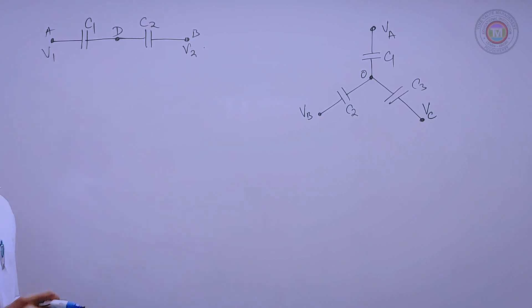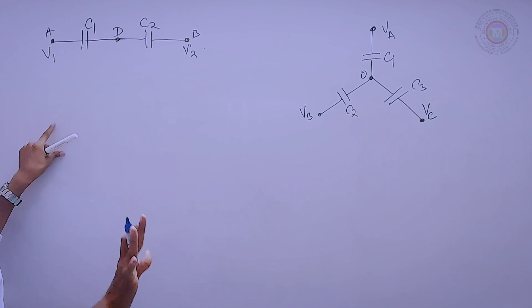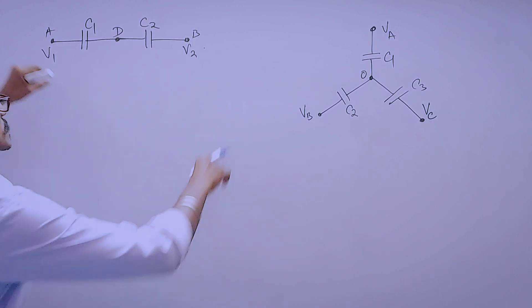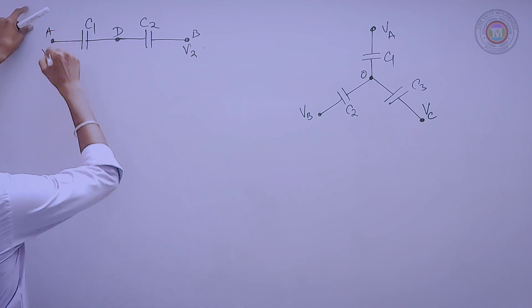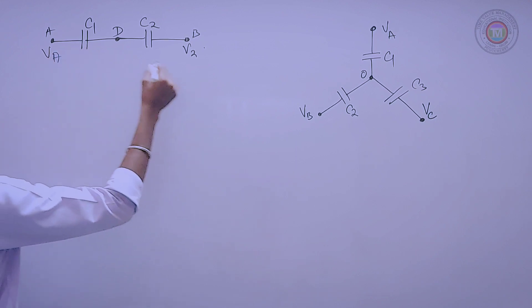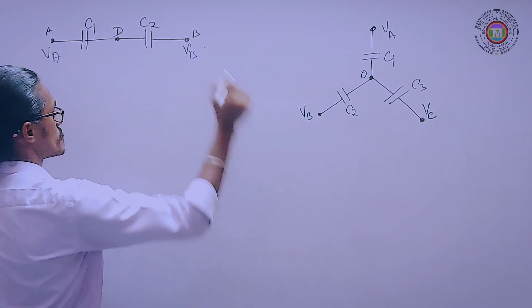How to approach these kind of variations? There are in a question or in part, there are two capacitors C1 and C2. Terminal voltages are given as at point A it is V1 and at point B it is V2. Just for convenience, we will consider this as VA and this as VB.